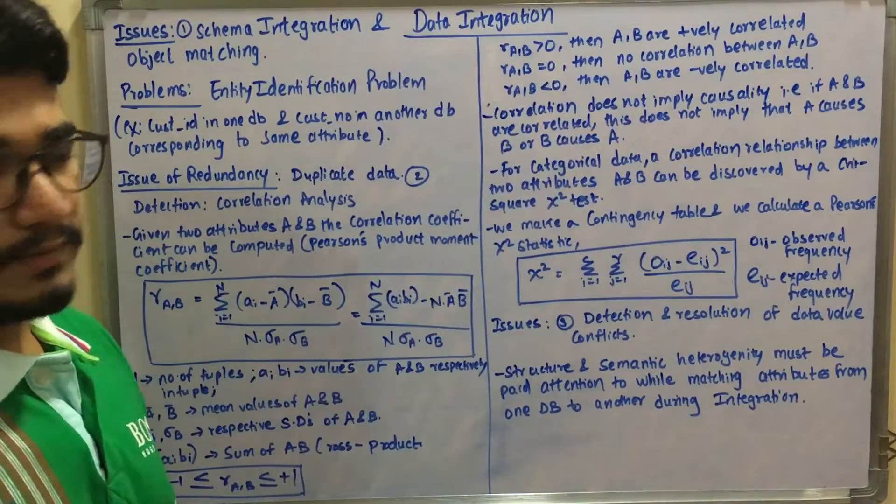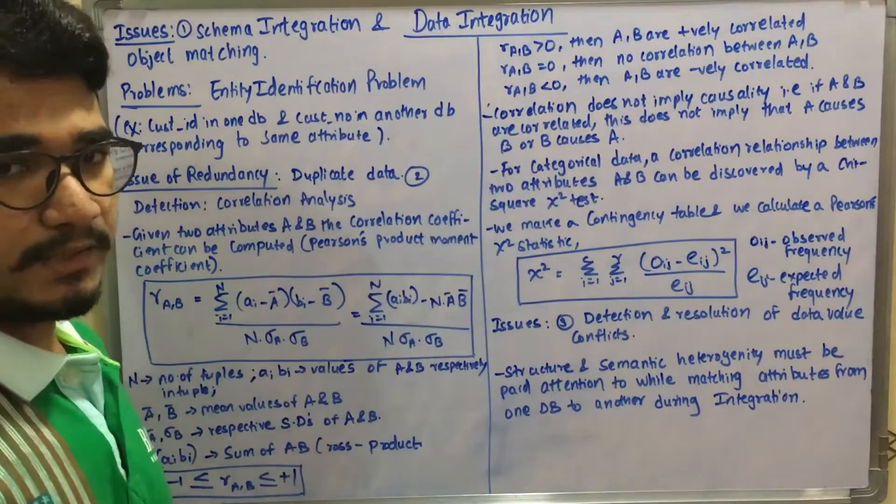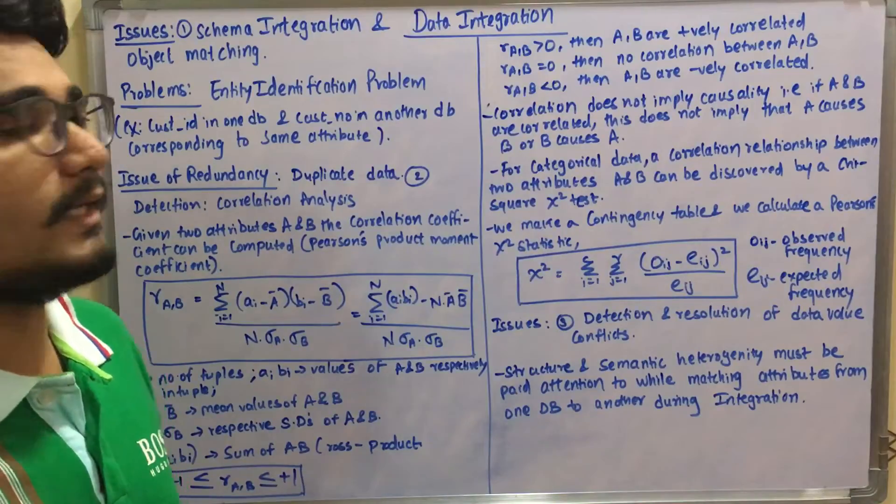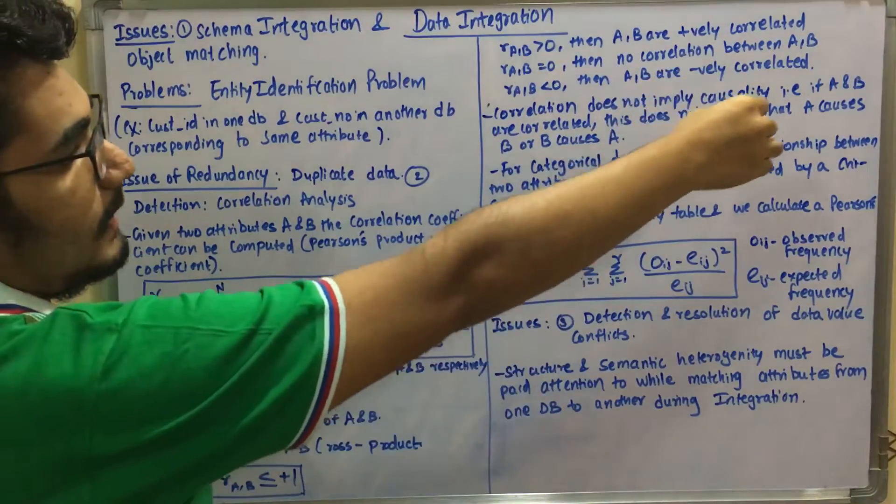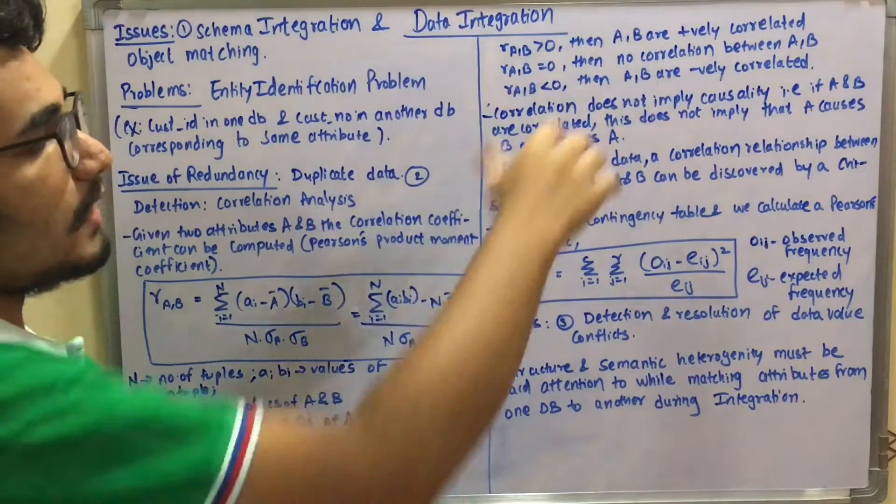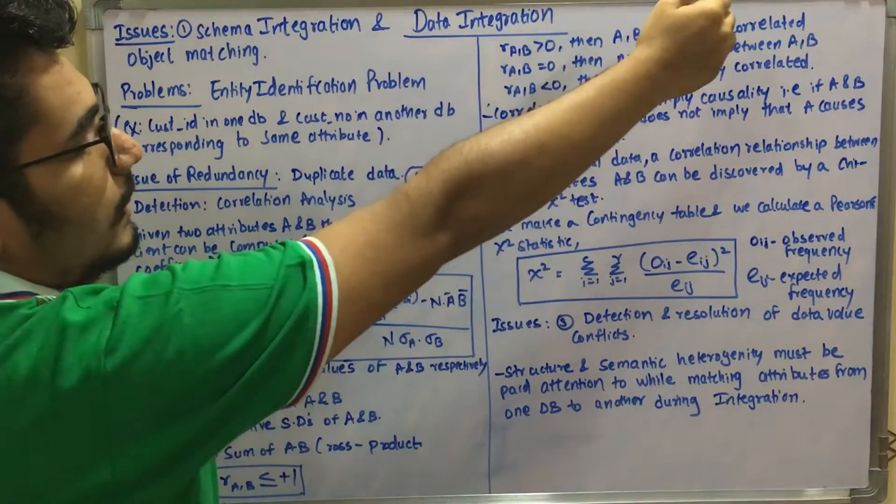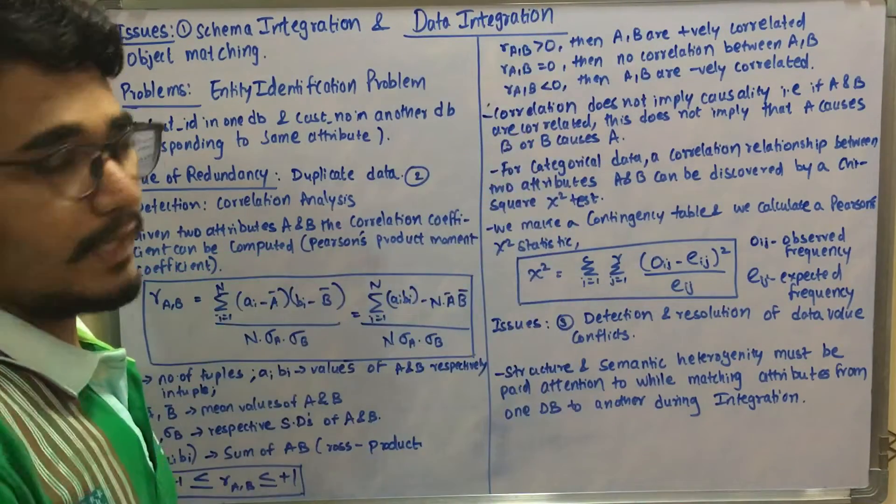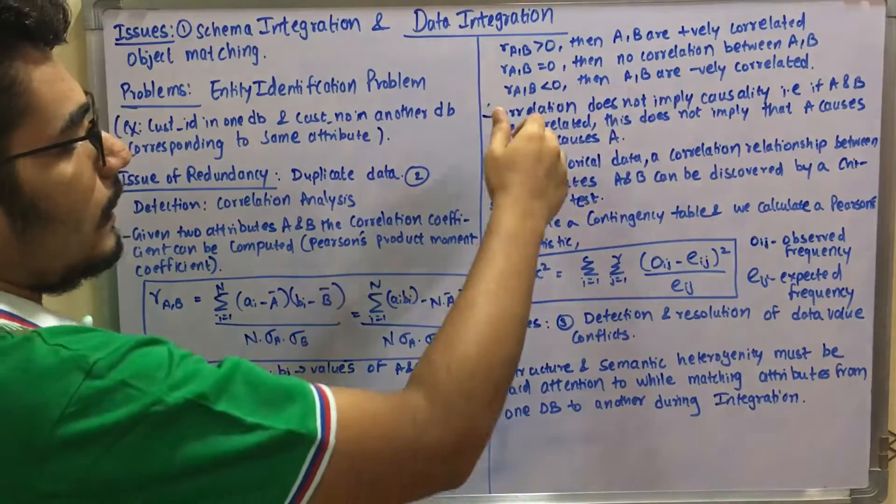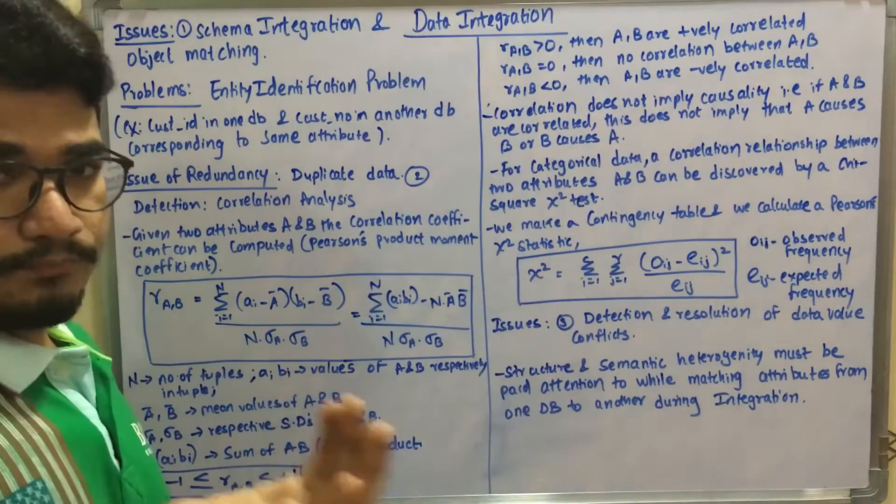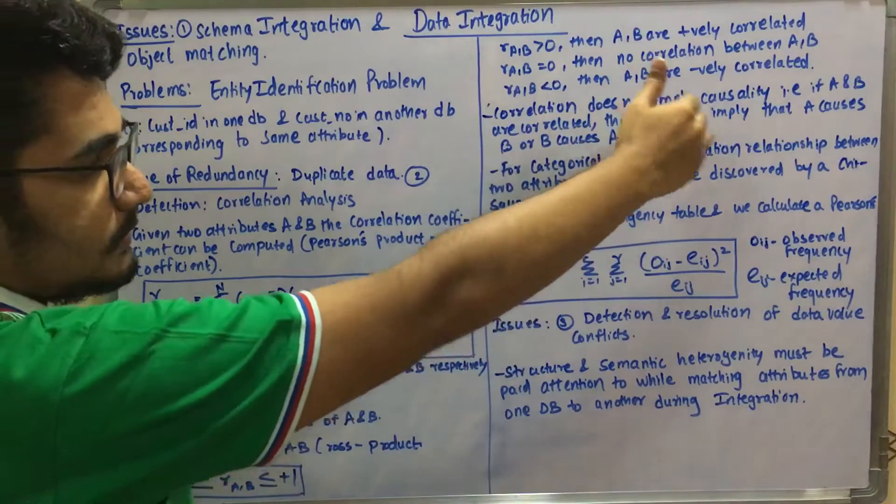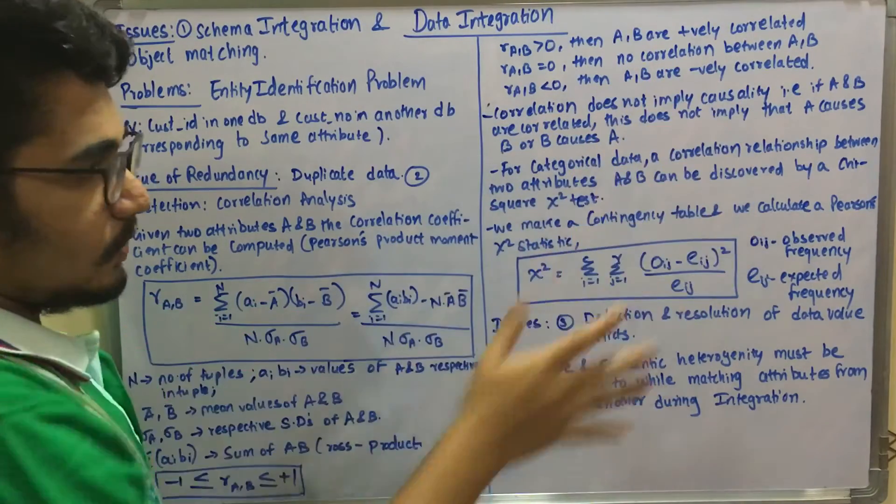After this correlation analysis is done, your correlation does not imply any kind of causality. If A and B are correlated, if you get r_AB greater than zero or less than zero, and A and B are found to be correlated, causality says this does not imply that A causes B or B causes A.